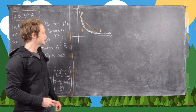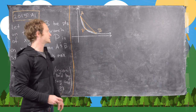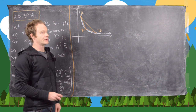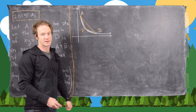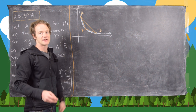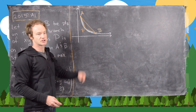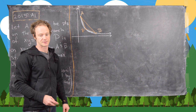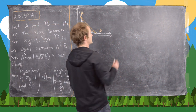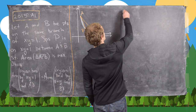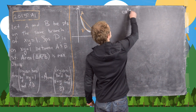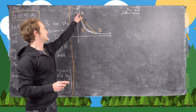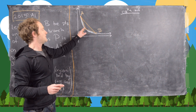The first thing we're going to want to do is figure out what this point P is. In order to do that, we're actually going to use techniques from calculus 1 — finding extreme values and such. We're going to tackle this whole problem using techniques from calculus 1. So the first thing we're going to do is look at the equations of the lines that we need: the line AB, AP, and BP.